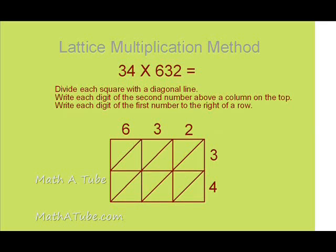The next step is to divide each square with a diagonal line. We will then write the second number across the top of our rectangle with one digit going on top of each column. Then we will write the first number along the right-hand side with one number for each row. So it should look something like this.